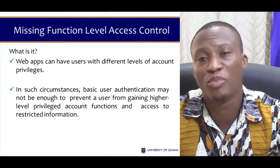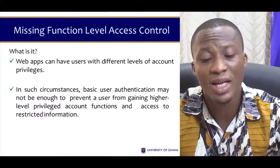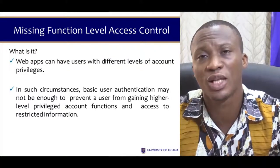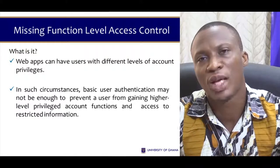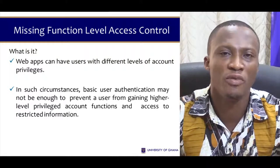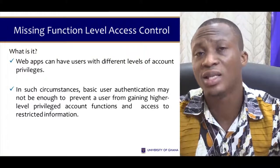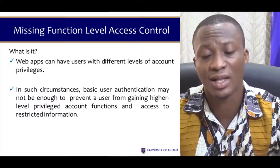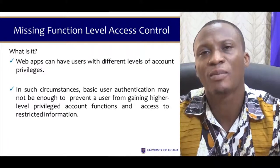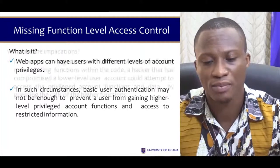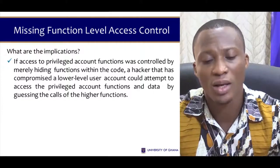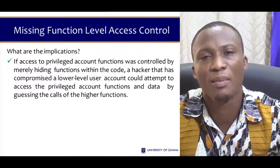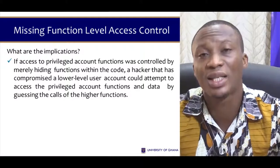If access to privileged account functions is controlled by merely hiding functions within code — which most programmers do — most programmers will just write a simple if or if-else statement. For example: if username equals administrator, give them this privilege; else give them another privilege. These are coded in plain text in web applications. If it's just that and not checked properly, we have a function level access control vulnerability. A hacker that has compromised a lower-level user account could attempt to access privileged account functions and data by just guessing the URL of the higher function.